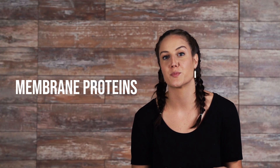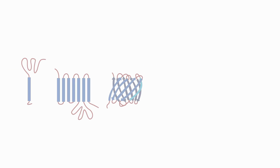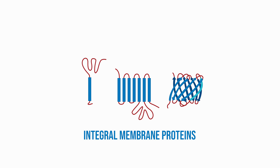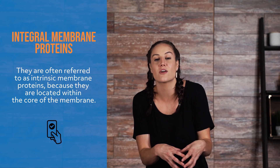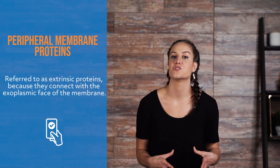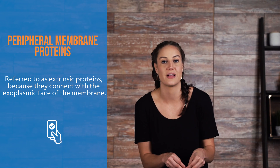Membrane proteins are the proteins that are part of biomembranes, or proteins that are interactive with biomembranes. There are two types: integral membrane proteins and peripheral membrane proteins. Integral membrane proteins are permanently integrated within the membrane — also referred to as intrinsic membrane proteins — located within the core of the membrane, able to permanently attach due to their hydrophobic side chains. Most integral proteins spread across the entire membrane. Peripheral membrane proteins are only temporarily part of a membrane or integral membrane protein. They typically attach by interacting with an integral membrane protein, or directly with a lipid polar head. Peripheral membrane proteins are also referred to as extrinsic proteins because they connect with the exoplasmic face of the membrane.